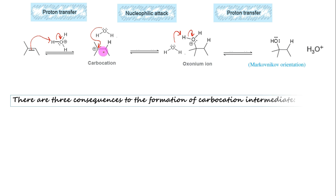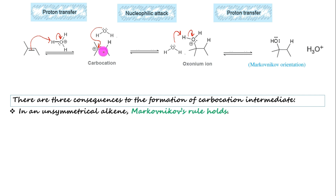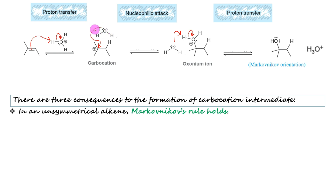Because of this carbocation intermediate there are three consequences. Number one: in an unsymmetrical alkene, water adds across the carbon-carbon double bond as per Markovnikov's rule. The mechanism goes through a carbocation generated by the addition of the positive part of the reagent — a proton — to form the more stable carbocation, which is then attacked by water to form the alcohol product. Therefore, acid-catalyzed hydration of an unsymmetrical alkene will always occur through Markovnikov's orientation.